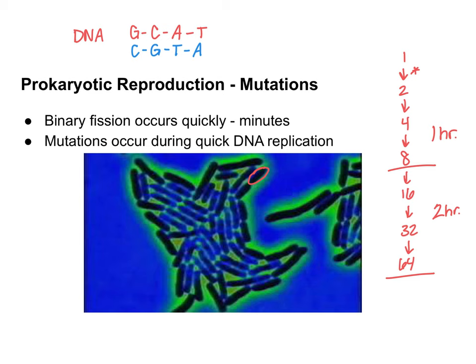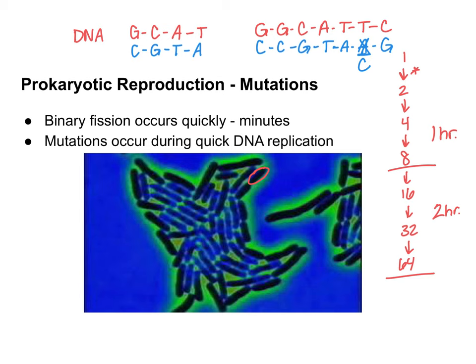Sometimes errors occur. If the original sequence is G, G, C, A, T, T, C, the complementary sequence should be C, C, G, T, A, A, G. But let's say instead of an adenine, a cytosine gets placed there — that is a genetic mutation. A mutation is simply a change in DNA.